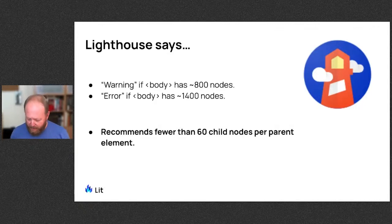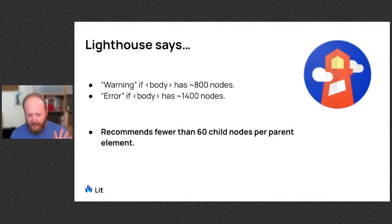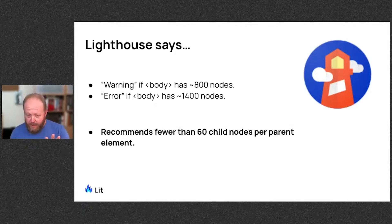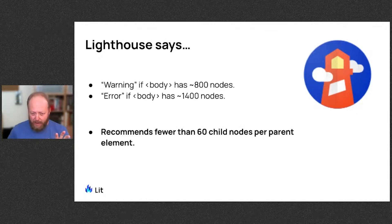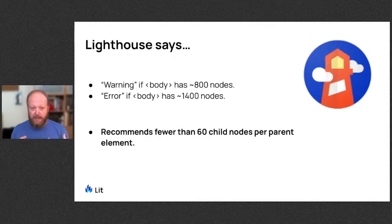Lighthouse, which is kind of the standard way of measuring your web app's performance, has guidelines that say: if you've got 800 nodes in your DOM, that's too much; 1,400 nodes and it'll really flag you. But the most important guideline it gives says: if you have any parent node with 60 or more child nodes, your list is too big — find another way.